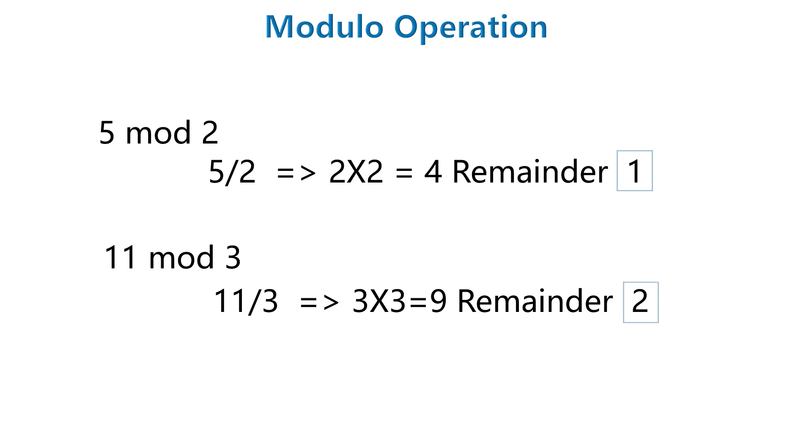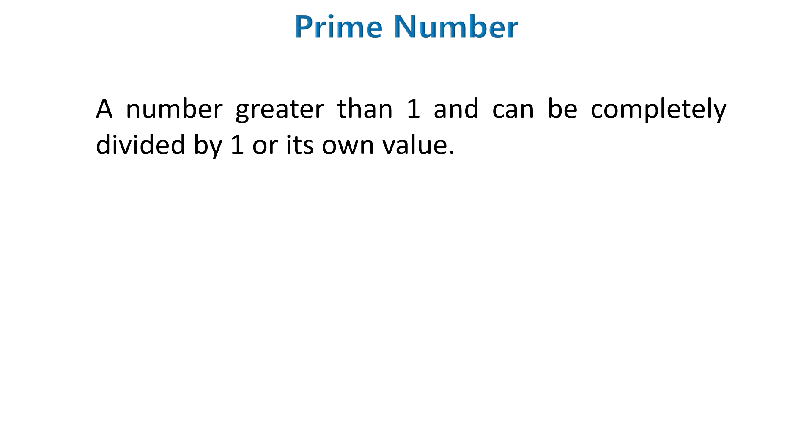As the name, it's a prime number. A prime number is a number greater than 1 and can be completely divided by its own value or by number 1 only. For example, let's see if 2 is a prime number or not. 2 can be divided by 2 and by 1 only so it's a prime number. Same way, 3 can be divided by 3 and only by 1 so it's also a prime number.